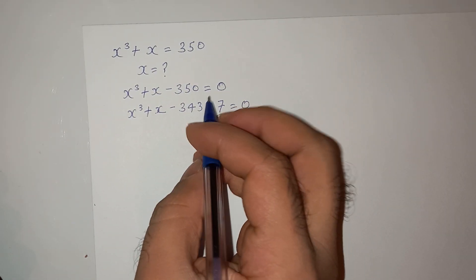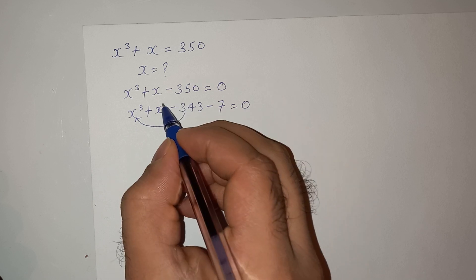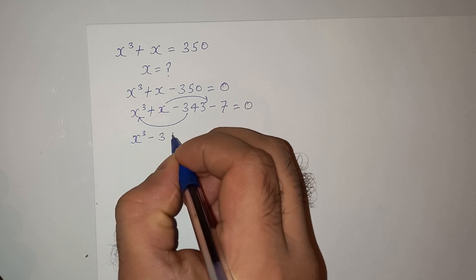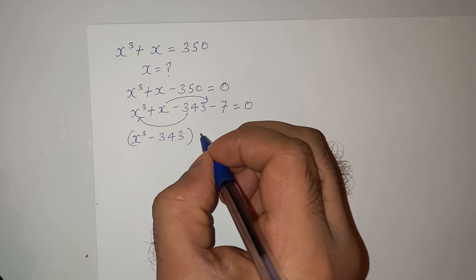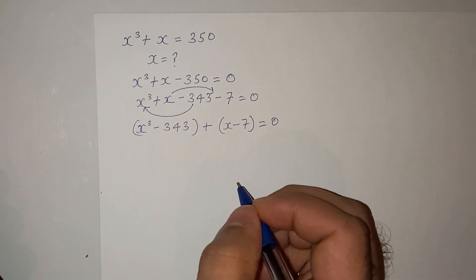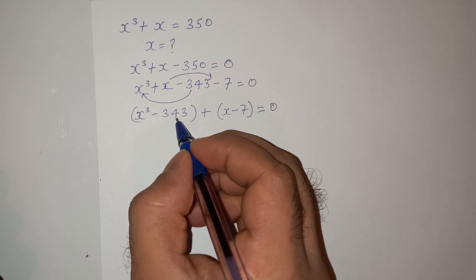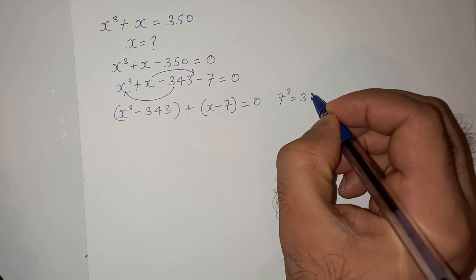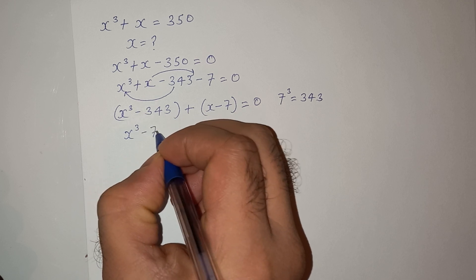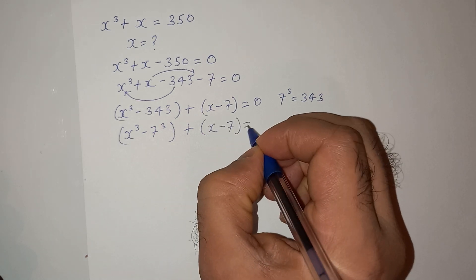Now we have to rearrange this equation. We will take the minus 343 to one side and x to the other side. So this will be x³ minus 343 plus x minus 7 equals to zero. Now we can write 343 as 7³, because 7³ equals 343. So this will be x³ minus 7³ plus x minus 7 equals to zero.